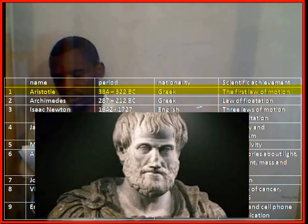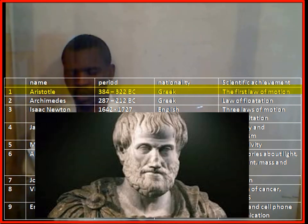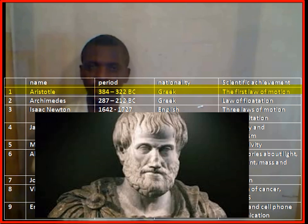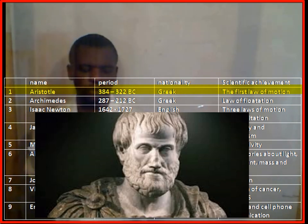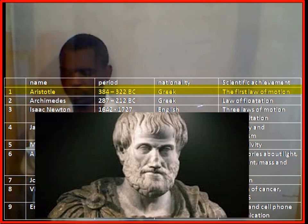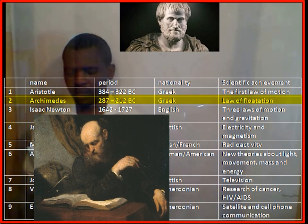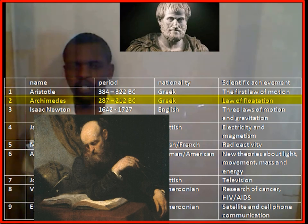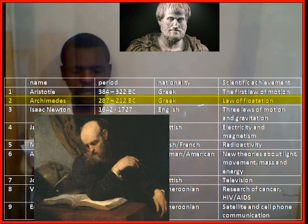Aristotle lived in the period 384 B.C. to 322 B.C., was a Greek national, and he put forward the first law of motion. Archimedes lived in the period 287 B.C. to 212 B.C., was a Greek national, and put forward the law of floating.